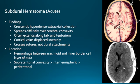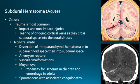As for causes, trauma is the most common. They can occur in impact and non-impact injuries. What happens is we get tearing of the bridging cortical veins as they cross the subdural space into the dural sinuses — so it's a venous bleed. These can also occur in non-traumatic settings: you can get dissection of an intraparenchymal hematoma into the subarachnoid space and then into the subdural space.